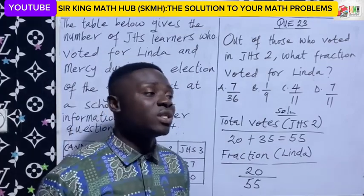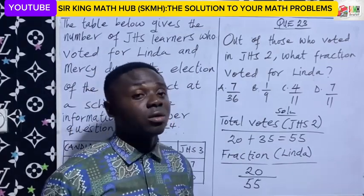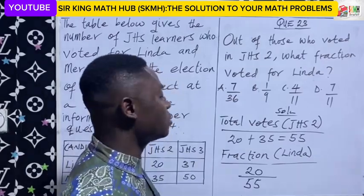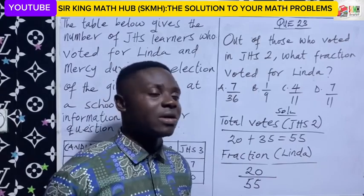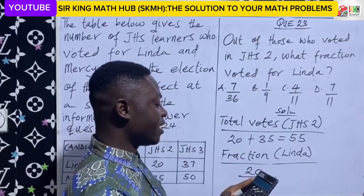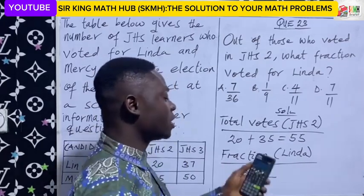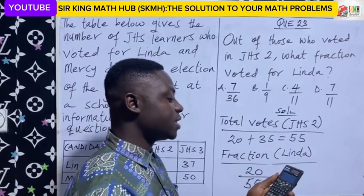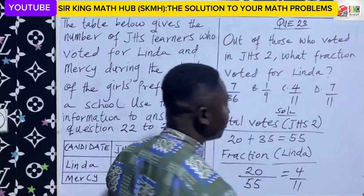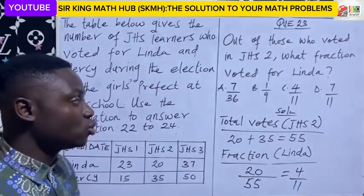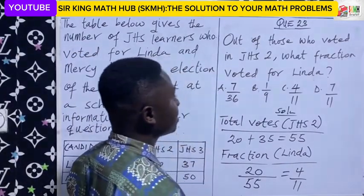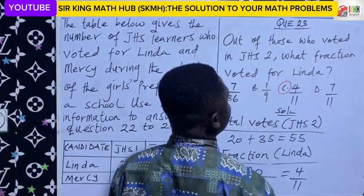As you can see, 20 out of 55 is not in the lowest form. During the exam, calculators are allowed, so we can easily reduce this using our calculator. We just enter 20 out of 55 into the calculator and press the equal sign. This gives us 4 out of 11. So from the alternatives, the right answer is C.